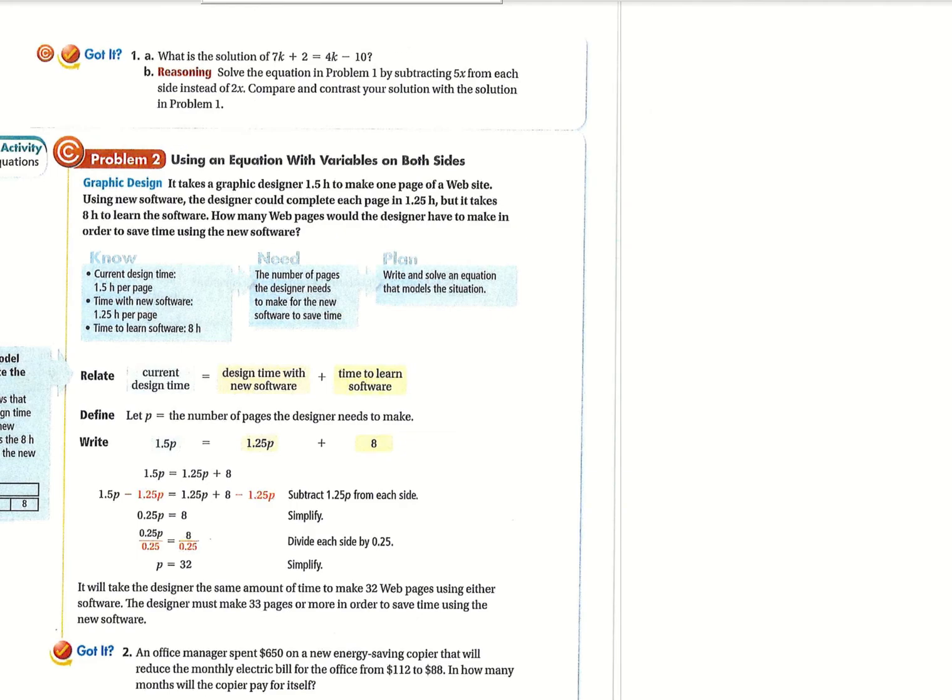All right, and then I want you to go ahead and do 1a right here just to make sure you've got that down. So you've got 7k plus 2 equals 4k minus 10. Pause the video. Do that now.